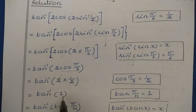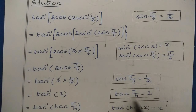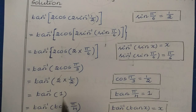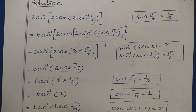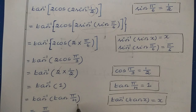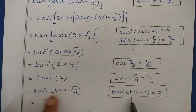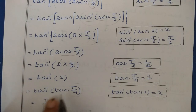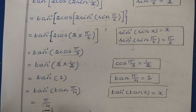We know tan(π/4) = 1, so tan⁻¹(1) = tan⁻¹(tan(π/4)). Since π/4 lies within the range of the tan inverse function, we apply tan⁻¹(tan x) = x, giving tan⁻¹(tan(π/4)) = π/4. So the final answer is π/4.